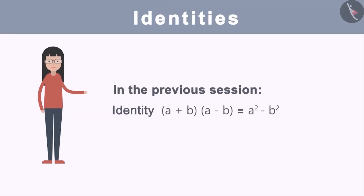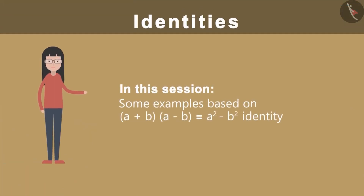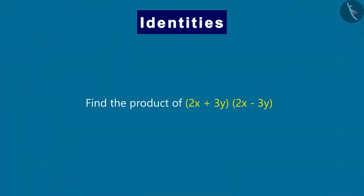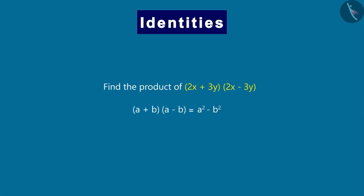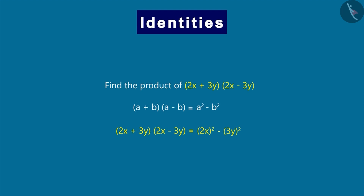In the previous session, we have seen this identity. Friends, in this session, we will see some examples based on this identity. When you observe these two expressions, you can see that this is in the form of a plus b, a minus b. Here, a is 2x and b is 3y. You can simplify this by using this identity. The result will be equal to 2x squared minus 3y squared, and the final answer will be this. Therefore, by using this identity, we can directly find the product of similar expressions.